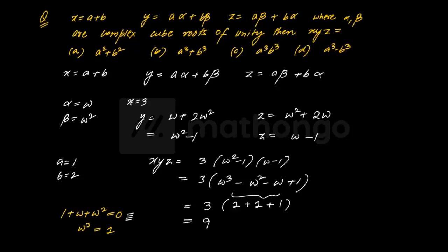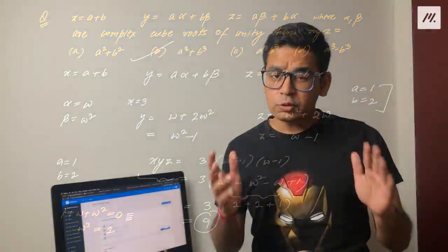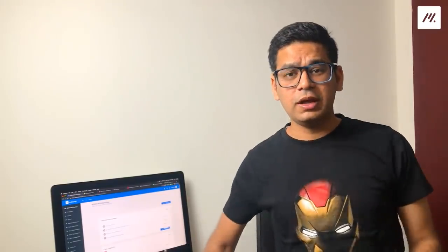Thik hai. Samjhaane mein time lag raha hai. Bitsight kya de dega tumhe 9, jo ki sirf B option mein ho raha hai - AQ plus BQ. This is how you can simplify a question and start solving for examinations like Bitsat or Comet. Aaya kuch samajh mein - kuch fundamental samajh mein hai ki substitution jo hum laga rahe the, usse kaise aapka jeevan sach mein aasaan ho sakta hai. Kahin ki baar jo fundamentals aapne shayad padhe bhi nahi hue hain, woh bhi aap solve karke aa jaoge paper mein. That is what is the beauty of preparing from the point of view of exam.